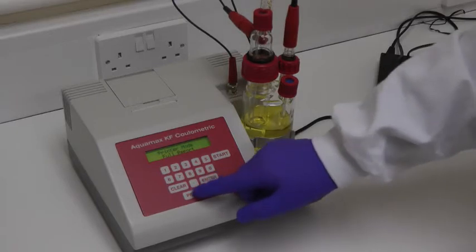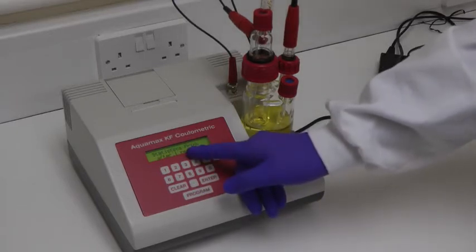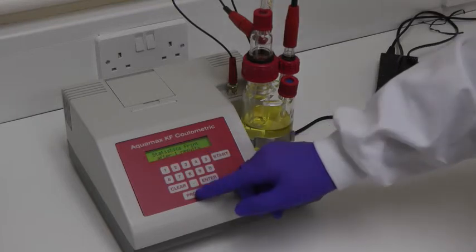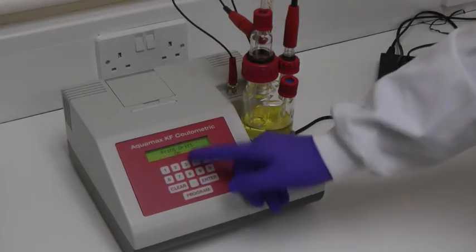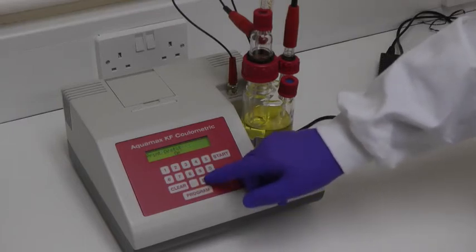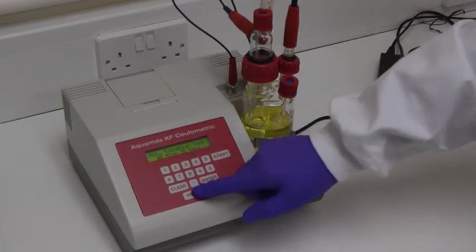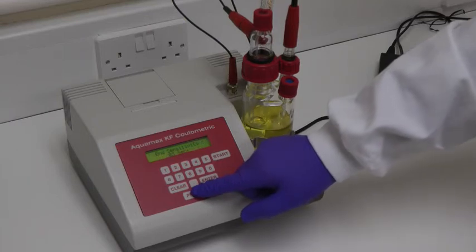The Statistics Print parameter will print statistical data from a series of up to 99 results. The Background Drift Print option may be either On or Off. Other parameters allow delay times to be programmed, minimum titration times to be set, and the sensitivity to be changed.